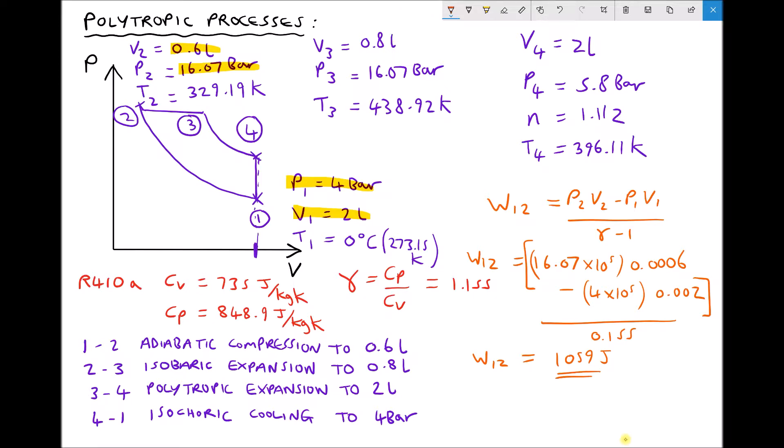So let's put W12 on our diagram. W12 equals 1059 joules. And then we can calculate W2 to 3 for our isobaric expansion.